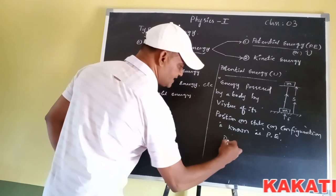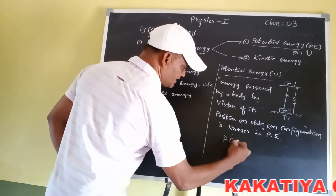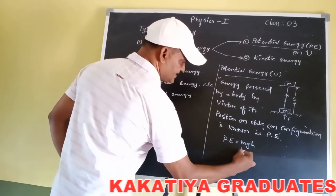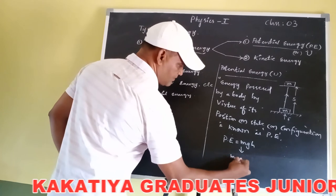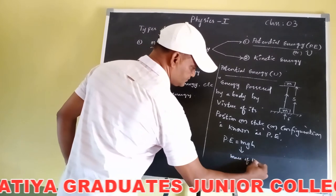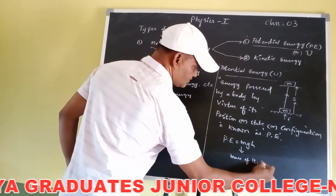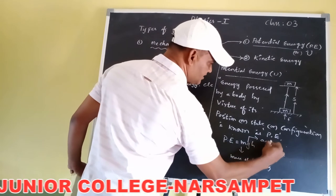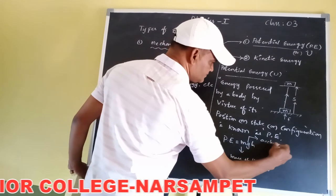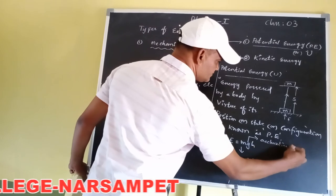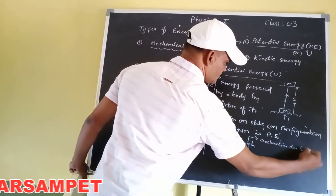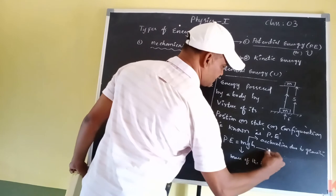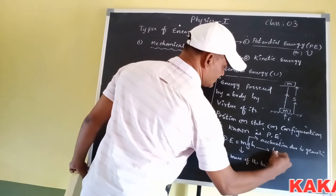The expression of potential energy is mgh, where M represents the mass of the body, G represents the acceleration due to gravity, and H represents the height of the body.